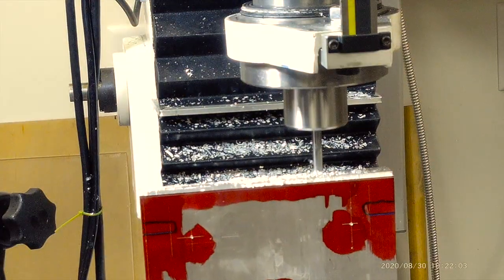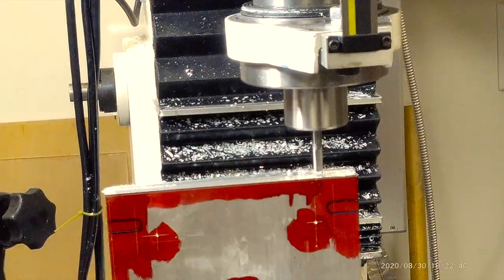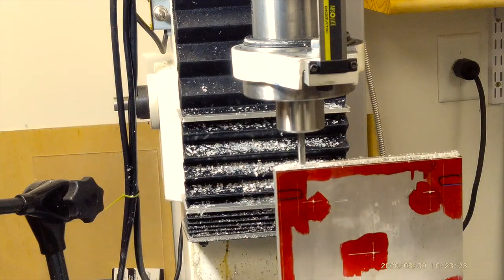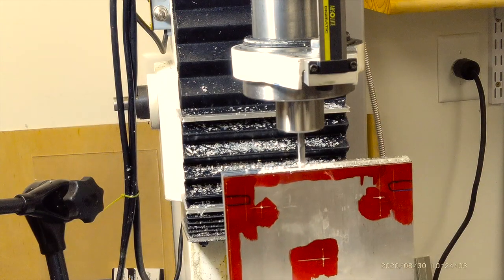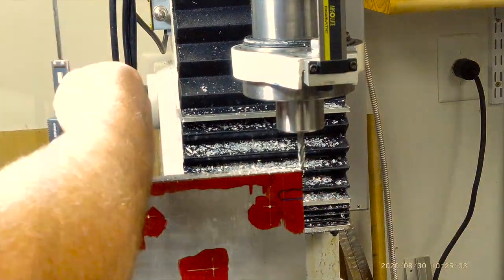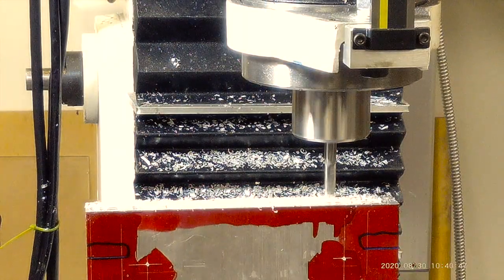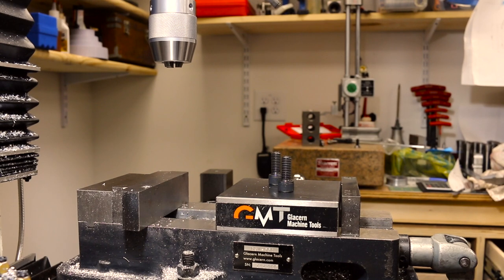And here we're milling the end plates down to size. We've got a little bit to take off to square up the last two sides. Just using a quarter-inch end mill, it was mounted and seemed easier.